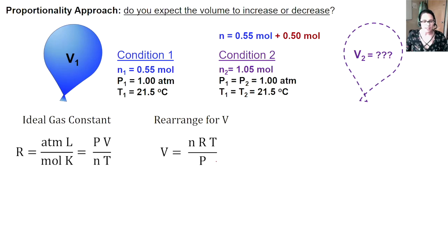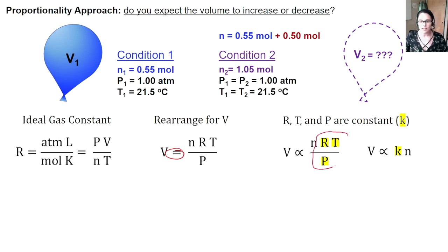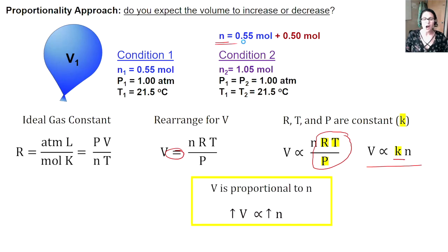Next, we can rewrite this equation as a proportionality. I've highlighted all of our constant variables and we can combine them all together and simplify them all to be represented by small k. Based on this proportionality, do you expect that the volume is going to increase or decrease when our amount has increased? Did you get it? Our amount is increasing and because volume is directly proportional to amount, we know that volume is also going to increase.